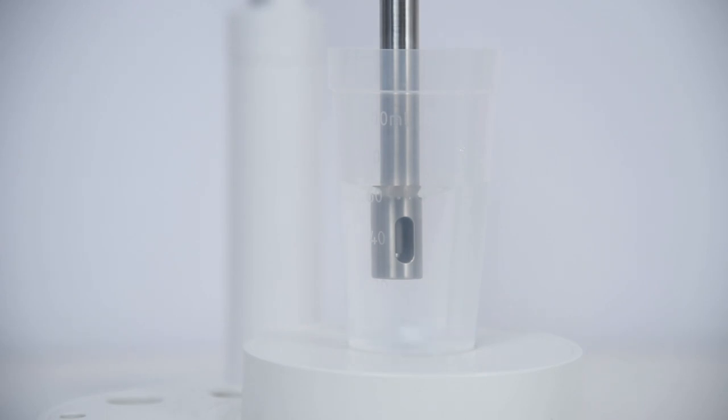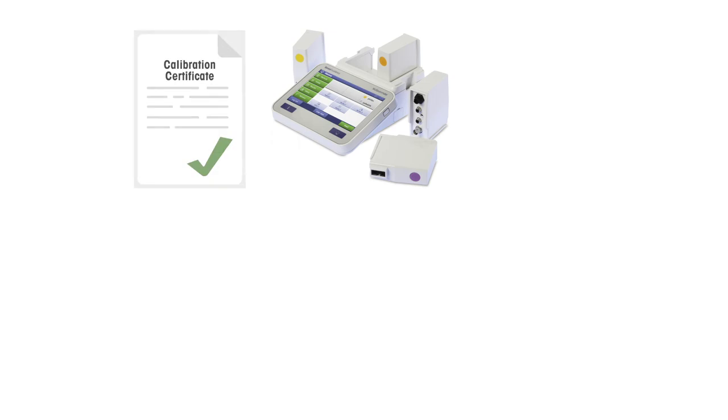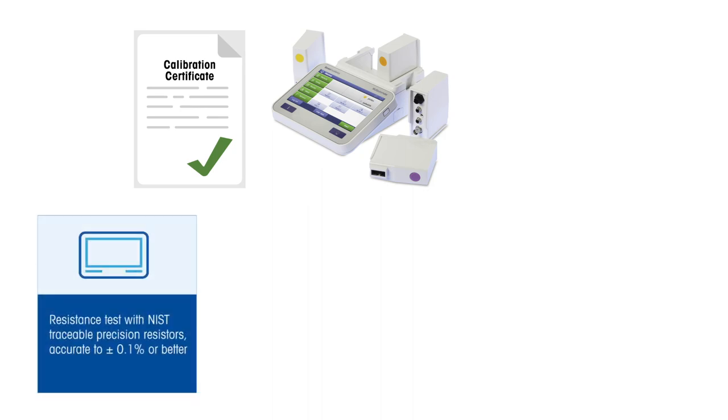USP645 defines the suitability of bulk water and sterile water samples through conductivity readings. Water conductivity must be measured accurately with calibrated instrumentation. You will require a conductivity meter whose resistance measurement has been verified with NIST traceable precision resistors, accurate to plus or minus 0.1% of the stated value.